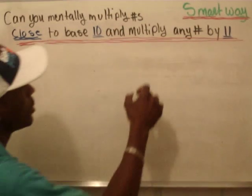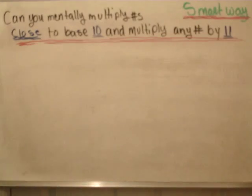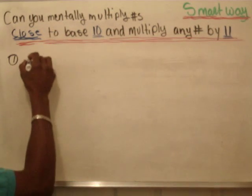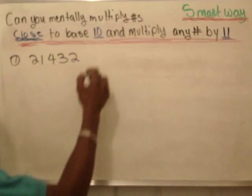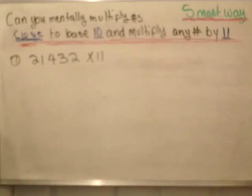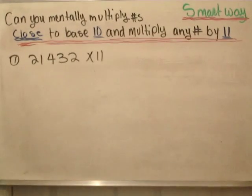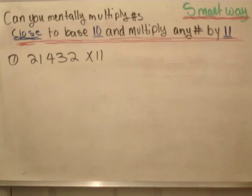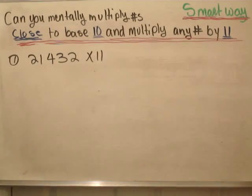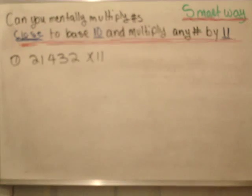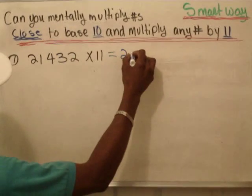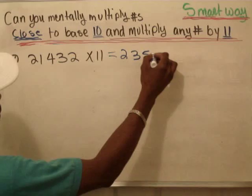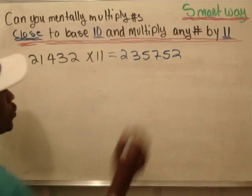Now let's start with the first problem — multiplying any number by 11. You're going to see how we do this. If I have 21432, and we're multiplying this by 11, I'll give you 5 seconds to try this. If you come up with 2, 3, 5, 7, 5, 2 — that's correct.